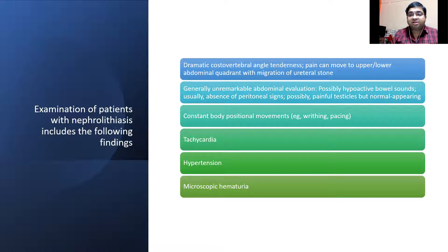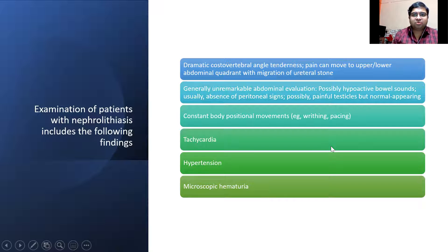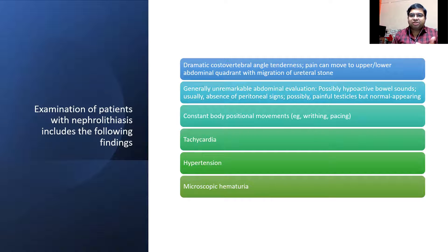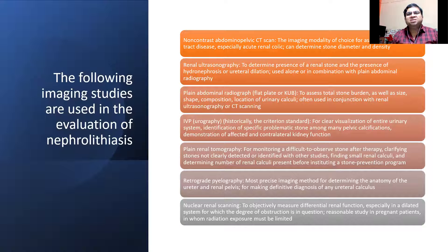On examination, patients will have costovertebral angle tenderness — the renal angle tenderness on percussion or palpation. They may also have referred symptoms such as painful testicles, absence of peritoneal signs, and can be writhing in pain due to colic with tachycardia and hypertension. Very importantly, urinalysis will show RBCs in plenty, with microscopic hematuria, clinching the diagnosis even in the absence of significant bacteriuria.